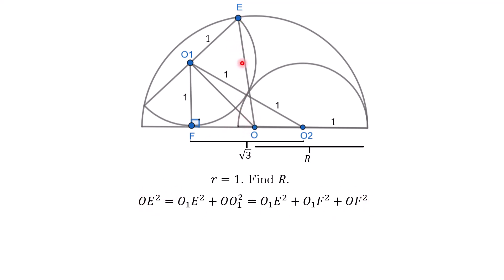OE squared, which we know is R², is equal to this square which is 1² plus this square which is 1² plus this square. Do we know this length? Yeah, actually we do because the full length here...